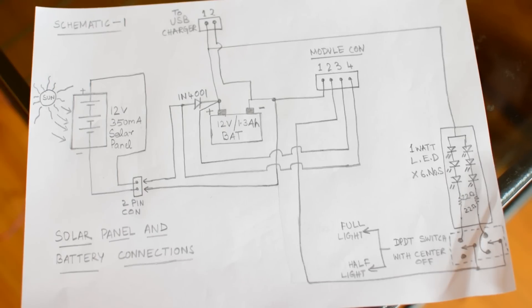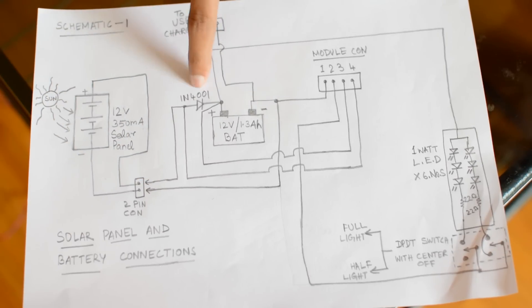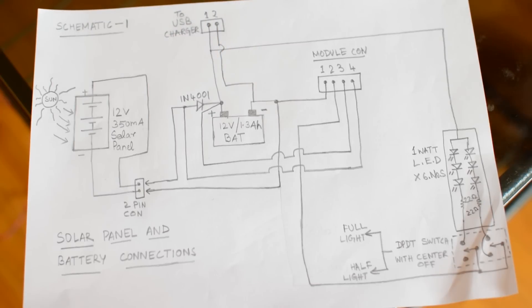This is the main schematic of the complete wiring. You can see the solar panel is connected with the help of a 2-pin connector to the battery. This diode is really important guys. Don't forget this thing. It will protect the solar panel from the reverse current from the battery.